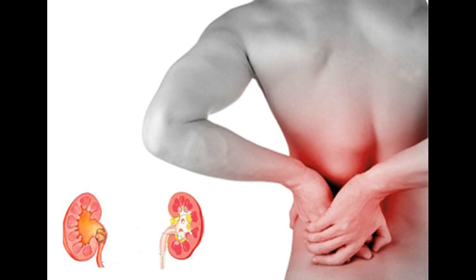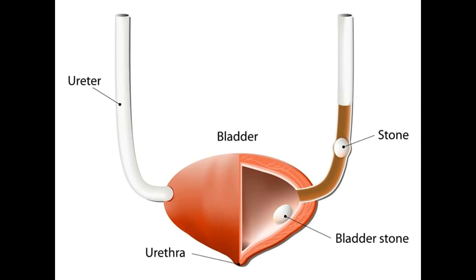Sometimes silent stones — those that do not cause symptoms — are found on x-rays taken during a general health exam. If the stones are small, they will often pass out of the body unnoticed. Often, kidney stones are found on an x-ray or ultrasound taken of someone who complains of blood in the urine or sudden pain. These diagnostic images give the doctor valuable information about the stone's size and location. Blood and urine tests help detect any abnormal substance that might promote stone formation. The doctor may also use a computerized tomography (CT) scan or an intravenous pyelogram (IVP), and the results help determine the proper treatment.